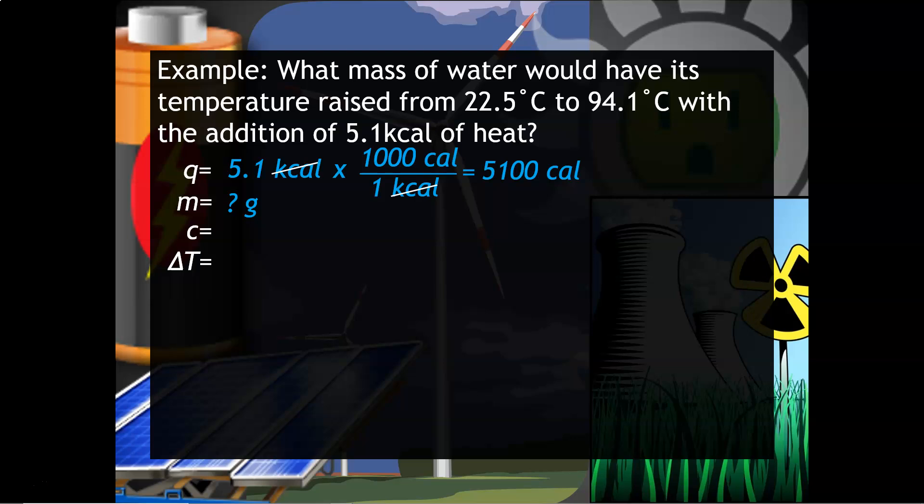So remember, I gave you two values. You could use 4.18 joules per gram degree C, or you could use 1 calorie per gram degree C. Since our Q is in calories, I would recommend the 1 calorie per gram degree C. And then delta T is 94.1 minus the 22.5 given in the problem.